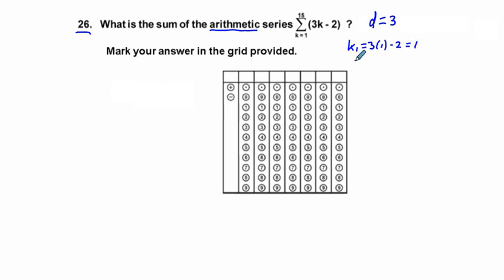And then we have k sub 2, which is going to be 3 times 2 minus 2, which equals 4. And so we go up, k sub 3 equals 3 times 3 minus 2 equals 9 minus 2 equals 7.